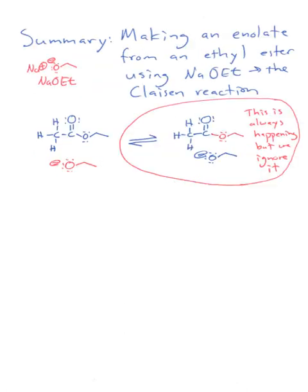Talking about making an enolate now from an ethyl ester using sodium ethoxide, for example the Claisen reaction, as I just said, even though when we have these starting materials, I never mentioned in class, we're always setting up this equilibrium, but we're ignoring it because the product is the same as the starting material.